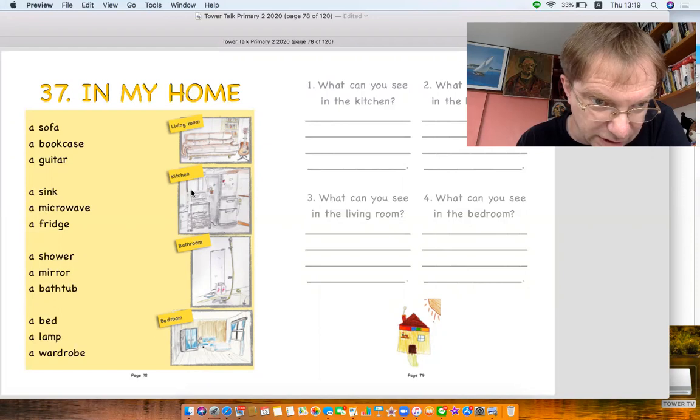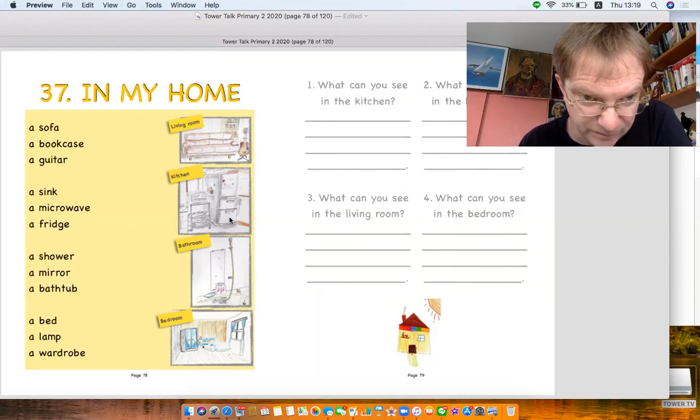Now here's a kitchen, we've got a sink, there's a sink just here. You can't see a microwave, there's a microwave. And a fridge, here's a fridge, just there.